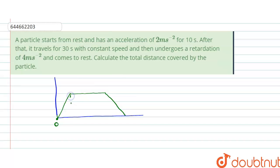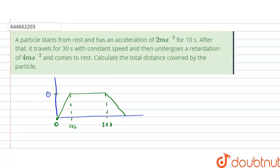The first time interval on the graph is 10 seconds, representing the acceleration phase. The next interval is 30 seconds for the constant speed phase. The velocity reached at the end of acceleration is 20 meters per second, since v = 2 × 10 = 20 m/s.